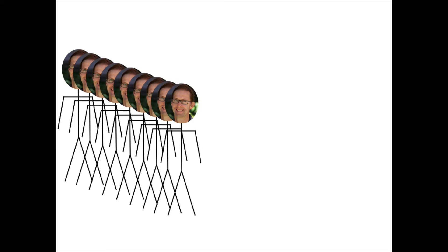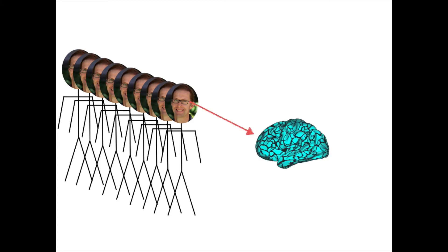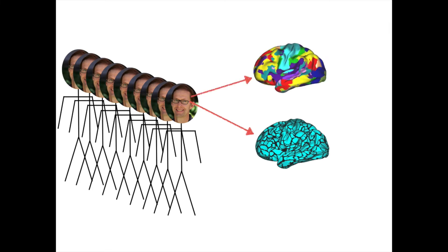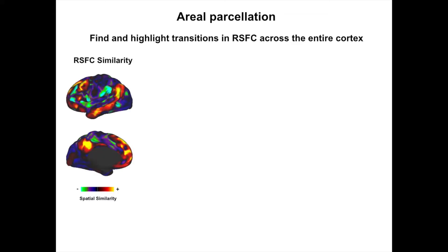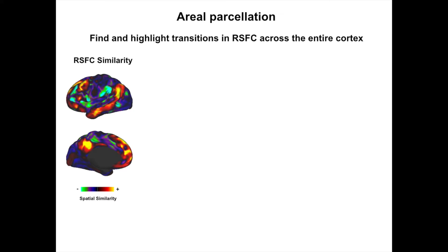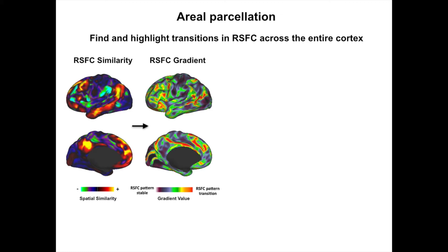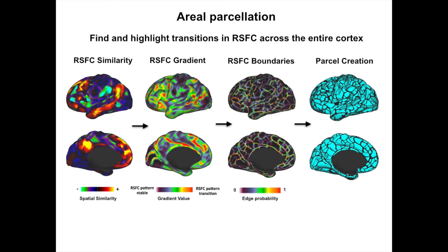With this data in hand, we adapted the most recent techniques for analyzing resting state data to obtain a cortical areal parcellation, as well as a systems-level description of this individual's brain. The areal parcellation was defined using the gradient-based technique described in earlier work from our lab. This method relies on the observation that patterns of resting state functional connectivity abruptly change across the cortical surface. These abrupt transitions are presumed to reflect boundaries between cortical areas, and we can apply this strategy across the entire brain to obtain an individualized parcellation.